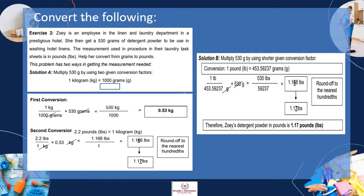Exercise 2: Zoe is an employee in the linen and laundry department in a prestigious hotel. She gets 530 grams of detergent powder to be used in washing hotel linens. The measurement used in the procedure in their laundry sheet task is in pounds. Help her convert from grams to pounds. This problem has two ways of getting the measurement needed. First solution: Multiply 530 grams using two given conversion factors. First conversion: (1 kg / 1,000 g) × 530 g — cancel the grams.